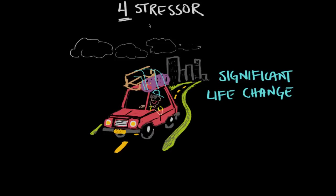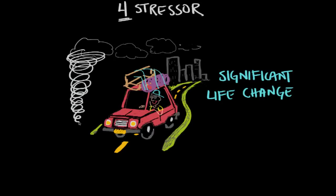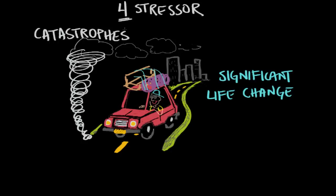The next major category of stressors are catastrophic events. Imagine you're driving to college through Oklahoma or Kansas and out of nowhere a cyclone appears, ripping apart the town you're driving through — that would be a catastrophe. Catastrophes are unpredictable, large-scale events that nearly everyone appraises as threatening, such as war or natural disasters. One study by Susan Salney in 2006 correlated Hurricane Katrina with nearly a tripled suicide rate for New Orleans four months later.